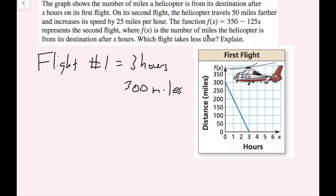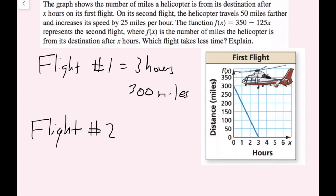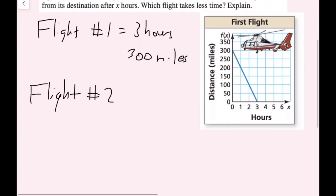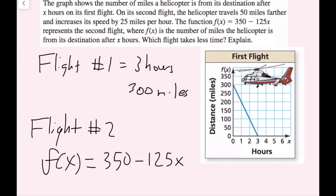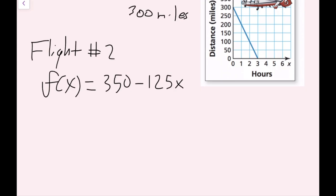So now from this, we can figure out some information about flight two. So I know the function for flight two is f of x equals 350 minus 125x. So I'm going to write that down. So f of x right here is the number of miles that the helicopter is from its destination after x hours. Well, we want that to be zero because if this is zero miles from your destination, that means that you've arrived. So if I set this f of x value, the entire left side of this equation equal to zero, and then solve for x, that will tell me exactly how much time the second flight took. So that's what I'm going to do right now. So plug in zero equals 350 minus 125x.